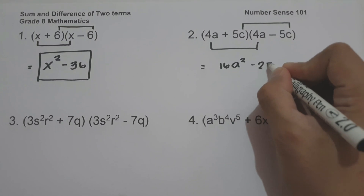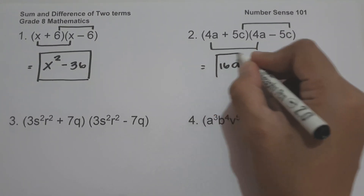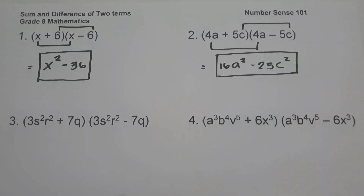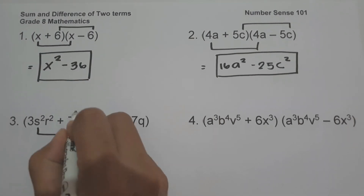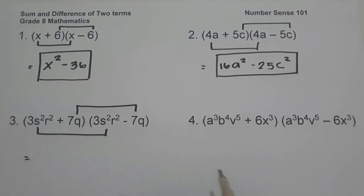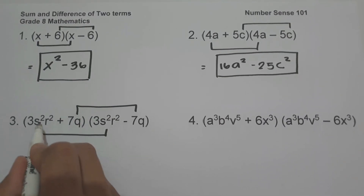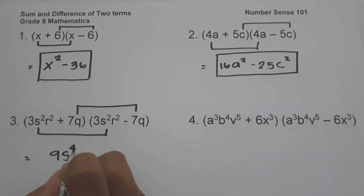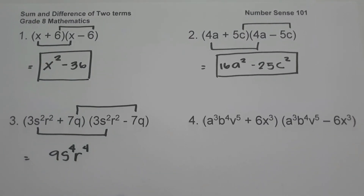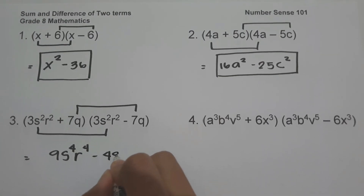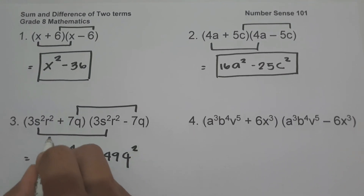On example number three we have quantity three s squared r squared plus seven Q times the quantity three s squared r squared minus seven Q. Multiply first term to first term: three times three is nine, add the exponents for s giving s to the fourth, and r raised to the fourth. Then seven Q times negative seven Q is negative forty-nine Q squared. So the answer is nine s to the fourth r to the fourth minus forty-nine Q squared.